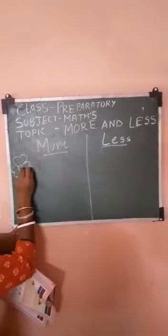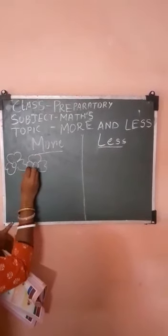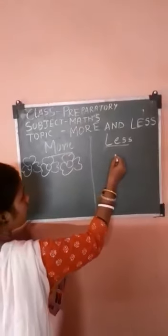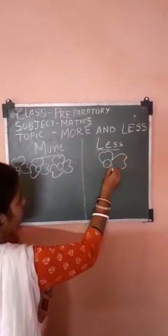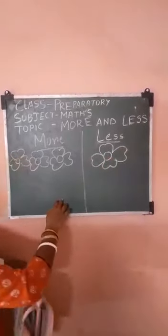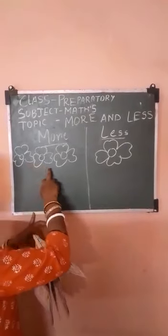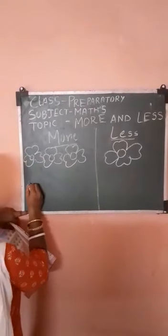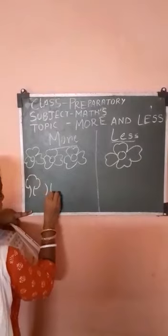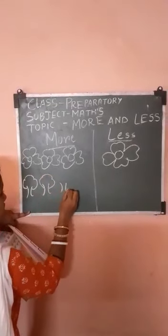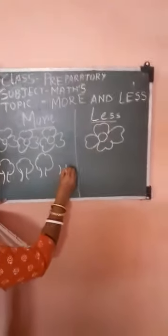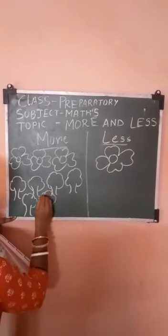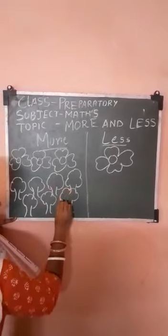Count after me. One, two, and three. Three here, and here only one. So this is more — one, two, and three. This is more. Now again, count after me: one, two, three, four, five, six, and seven.